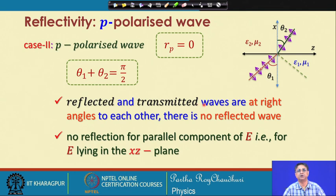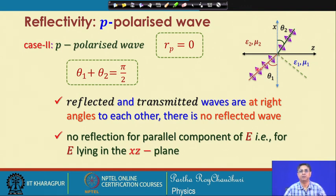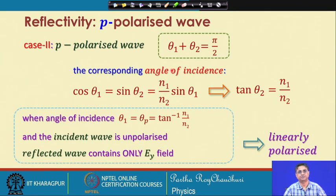At Brewster's condition, the reflected and transmitted waves are at 90° to each other, and there is no reflection when only the p-polarized wave is present — that is, when the electric field lies only in the x-z plane with no perpendicular component (no S-polarized component). This gives the situation where incident waves are transmitted through with no reflection, yielding R_p = 0.